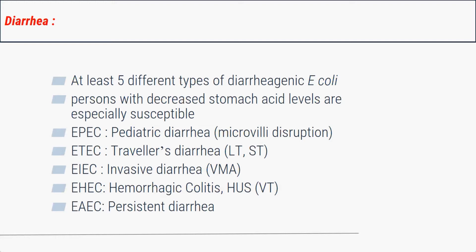ETEC — enterotoxigenic E. coli — causes traveler's diarrhea by producing two toxins: labile toxin and stable toxin. The labile toxin increases cyclic AMP levels, which draws fluids and electrolytes out of cells into the lumen. The stable toxin increases cyclic GMP levels and has a similar effect.